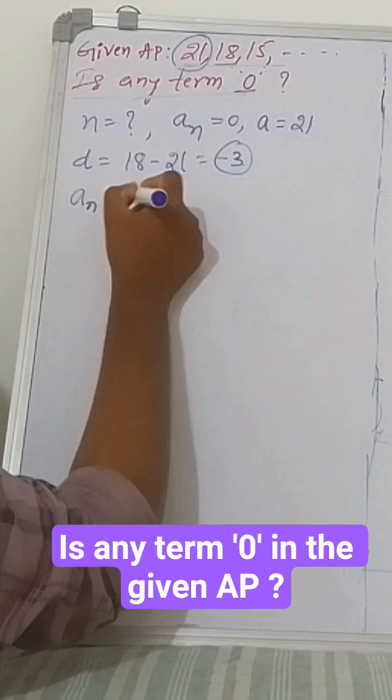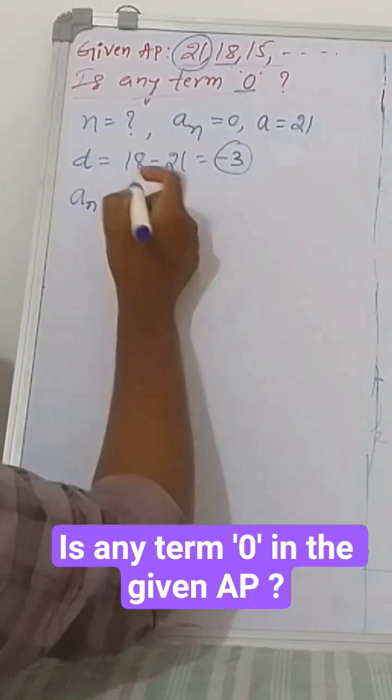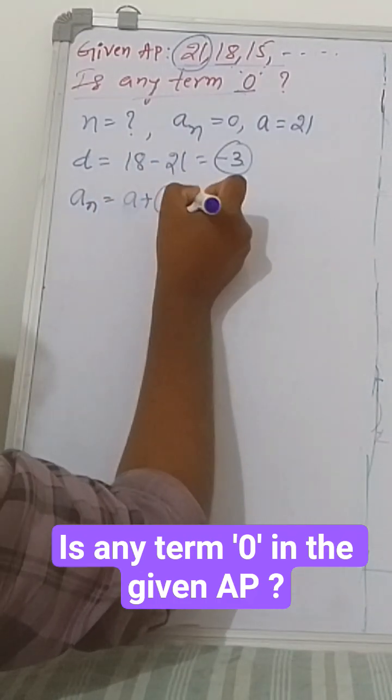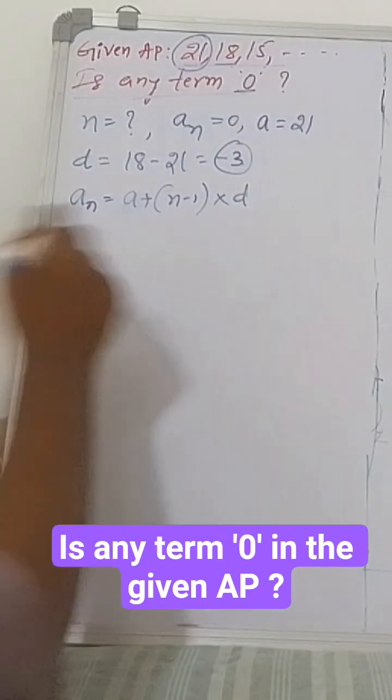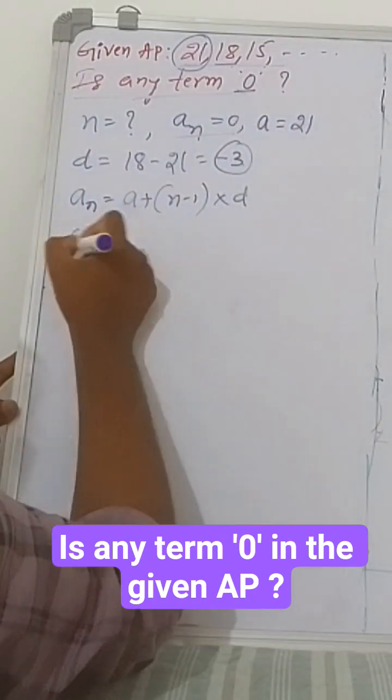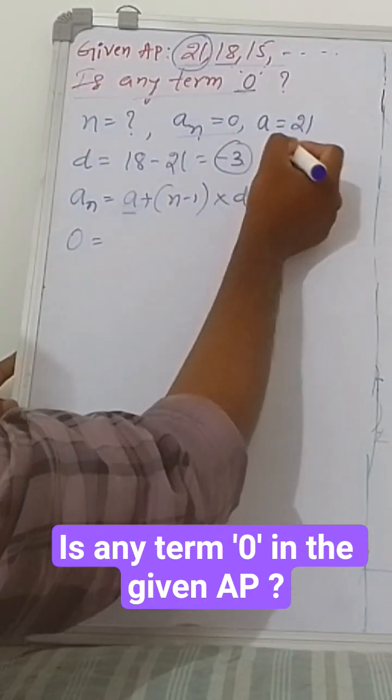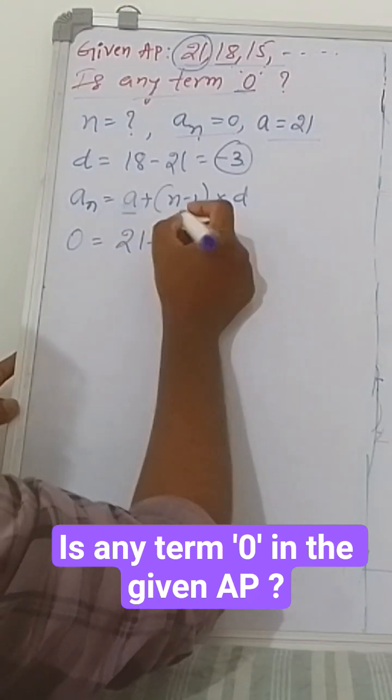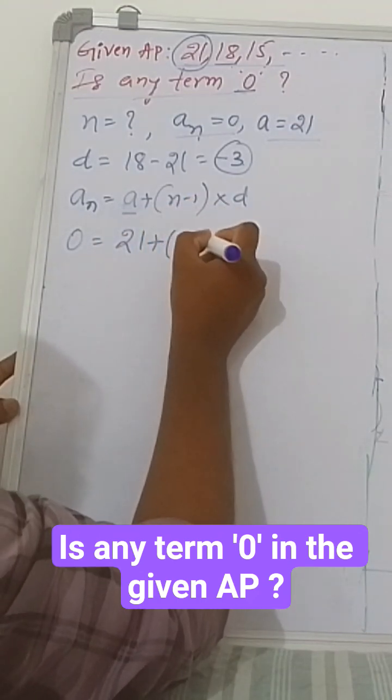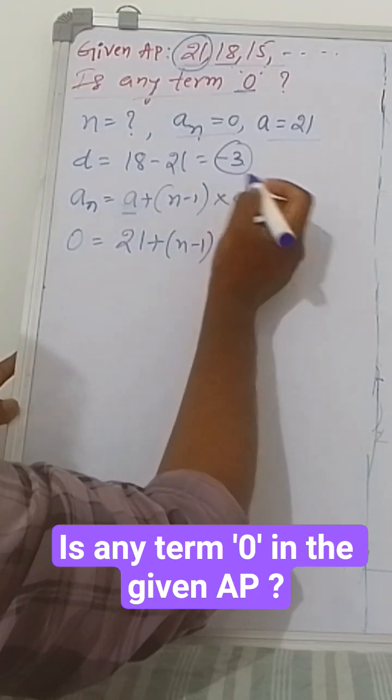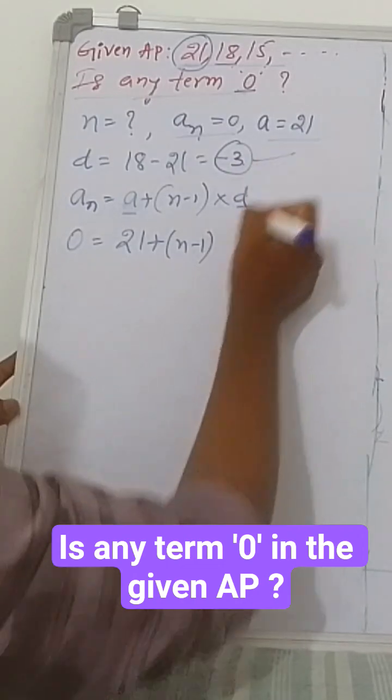Now we have the nth term formula: a_n equals a plus (n minus 1) times d. Substitute the values. a_n equals 0, that equals a which is 21. So 21 plus (n minus 1) - we don't know n - times d, which we found is minus 3.